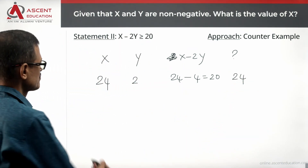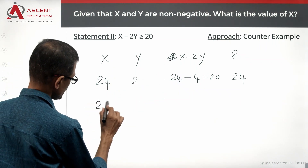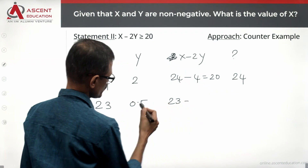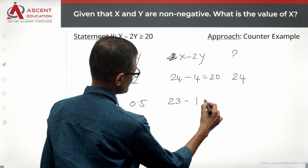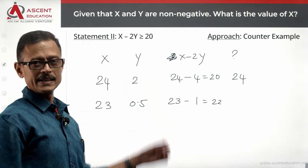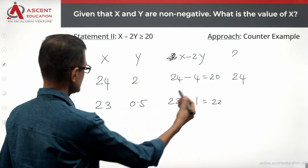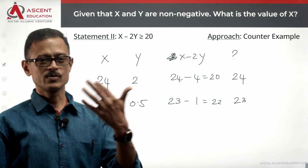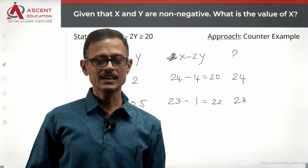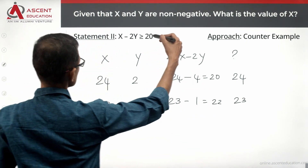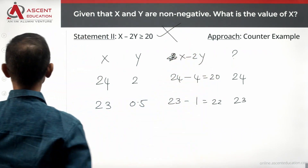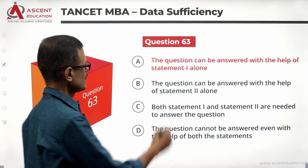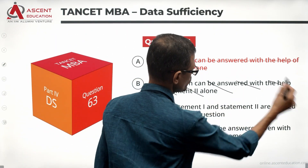Is 24 the only possible value? Let's try x = 23 and y = 0.5. Then 23 minus 2 times 0.5 equals 22, which is greater than or equal to 20. So x can be 23, or 24, or 23.1 — infinite possibilities exist with Statement 2 as well. Statement 2 alone is not sufficient, so we rule out answer option B.